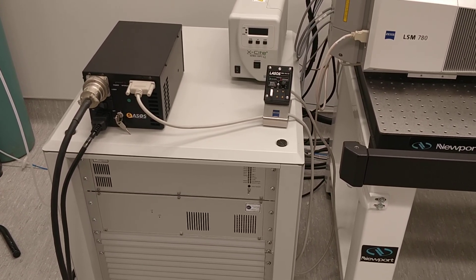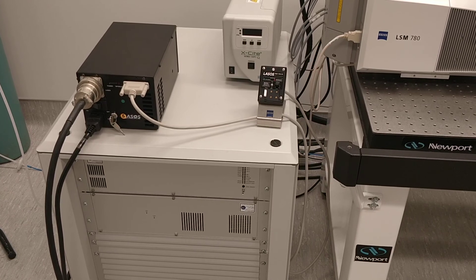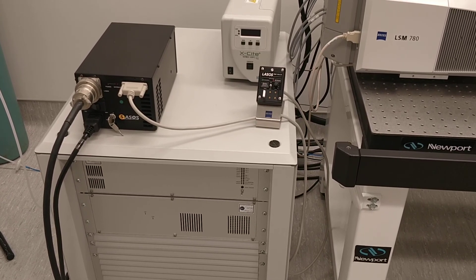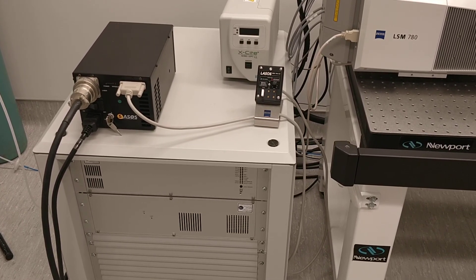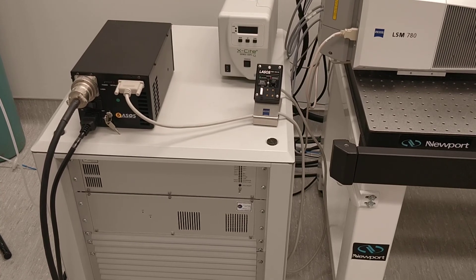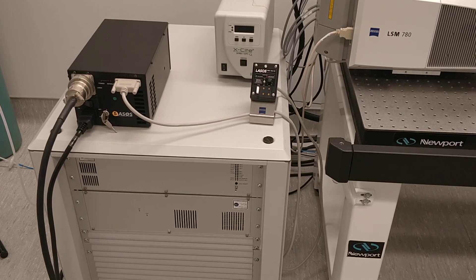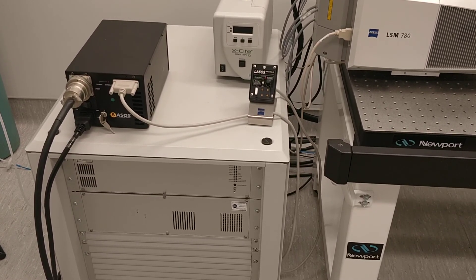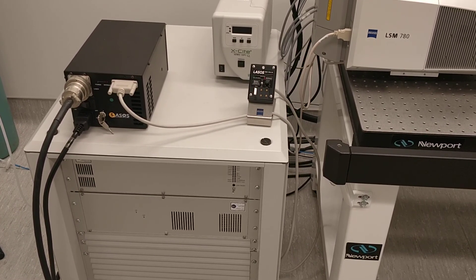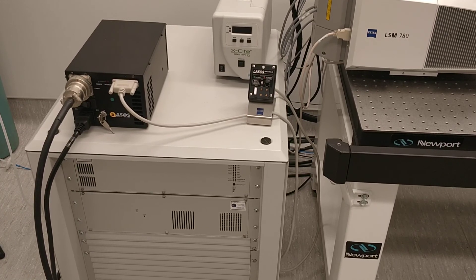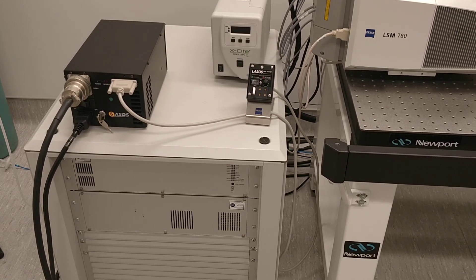And then you have your 561 laser line, which is for Rhodamine, Alexa 555, 568, 594. It's all the same laser line, and finally you have the 633 wavelength, which is usually for your APC and anything that's within the IR range.